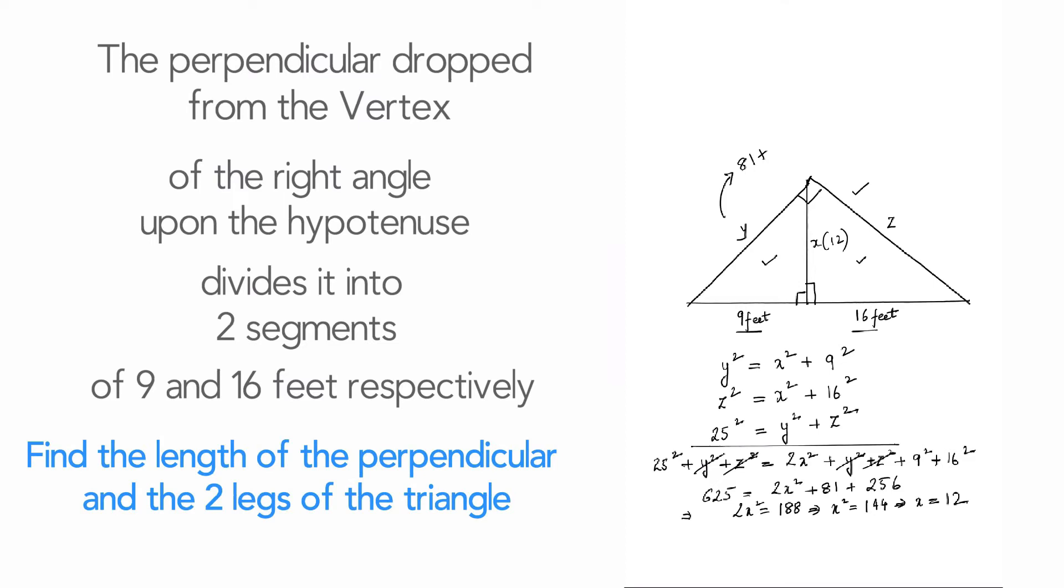And now that we know the value of x, let's solve for y. So we get y² = 81 + 144 which gives us y² = 225 or y = 15. And similarly, let's solve for z. So that gives us z² = 400 or z = 20. So to summarize, we have x = 12, y = 15 and z = 20.